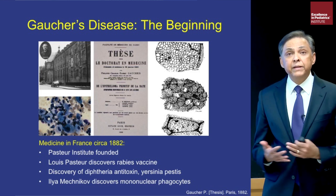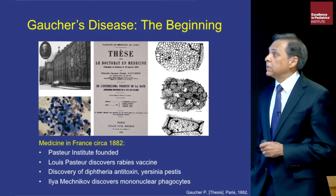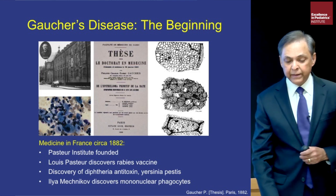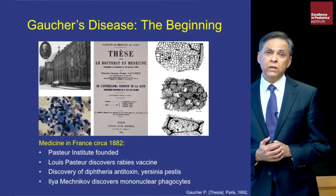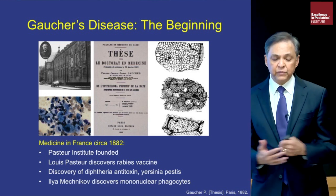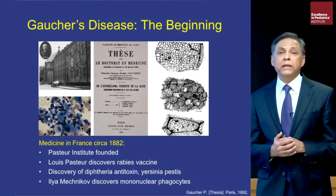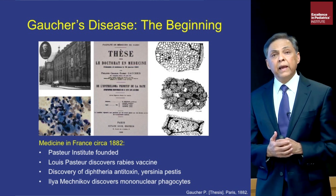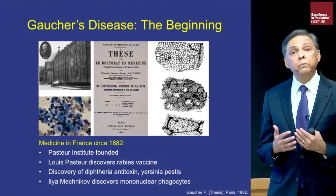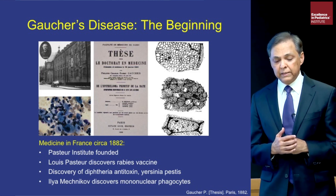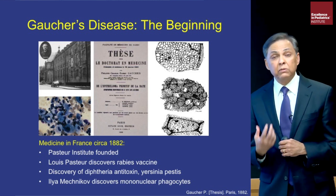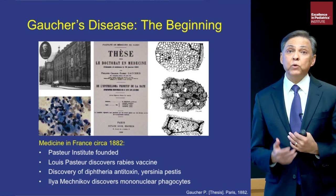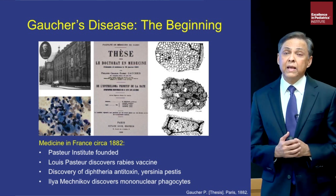Gaucher Disease bears its name from Dr. Philippe Gaucher. He was a medical student in 1882 who worked in Hospital Gaucher in downtown Paris. In those days, to earn your MD degree you studied a patient very carefully over several years and wrote a scholarly piece of work. Dr. Gaucher looked after a 32-year-old woman who died of cachexia and hepatosplenomegaly and obtained autopsy material for detailed pathological studies.